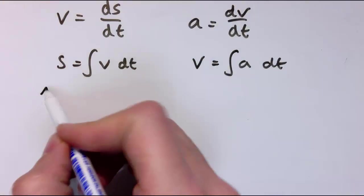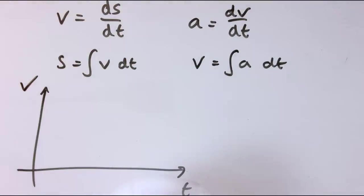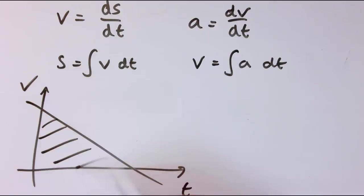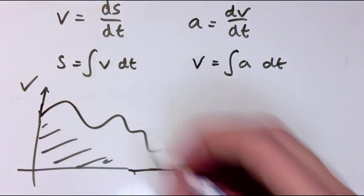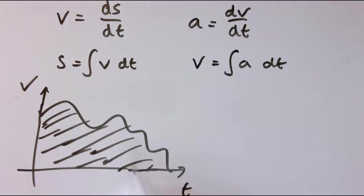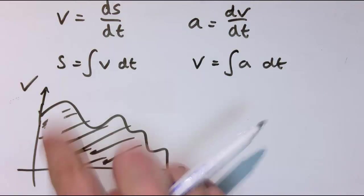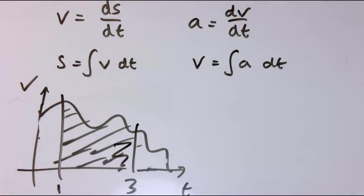In some ways this extends what you already know: on a velocity-time graph, the area under the graph is the displacement. All I'm saying now is this doesn't have to be a straight line — it could be some other curve. As long as I can integrate it, that gives me the area. So if I want the change in displacement between t = 1 and t = 3, I just find the definite integral between 1 and 3.